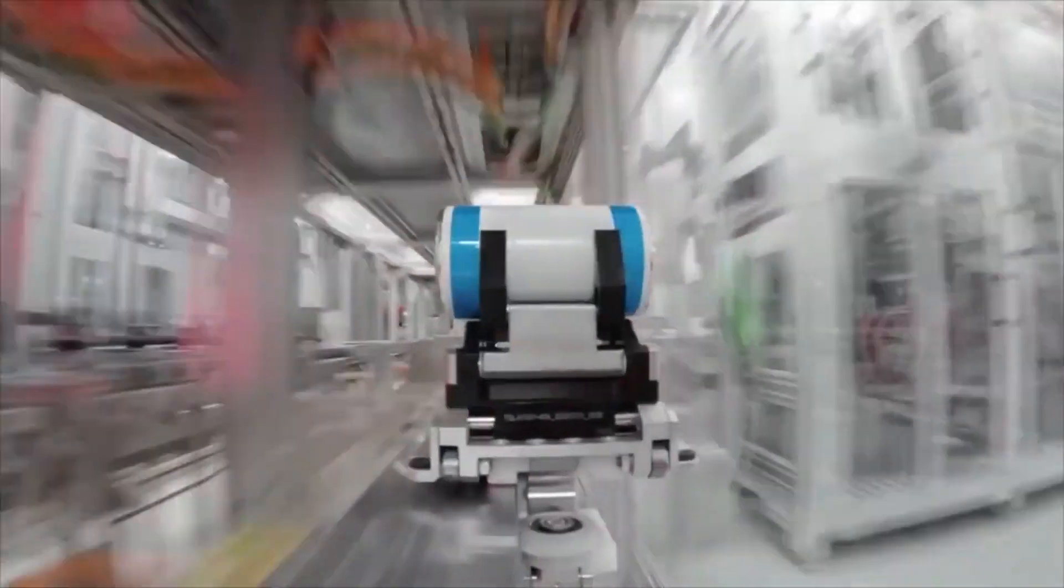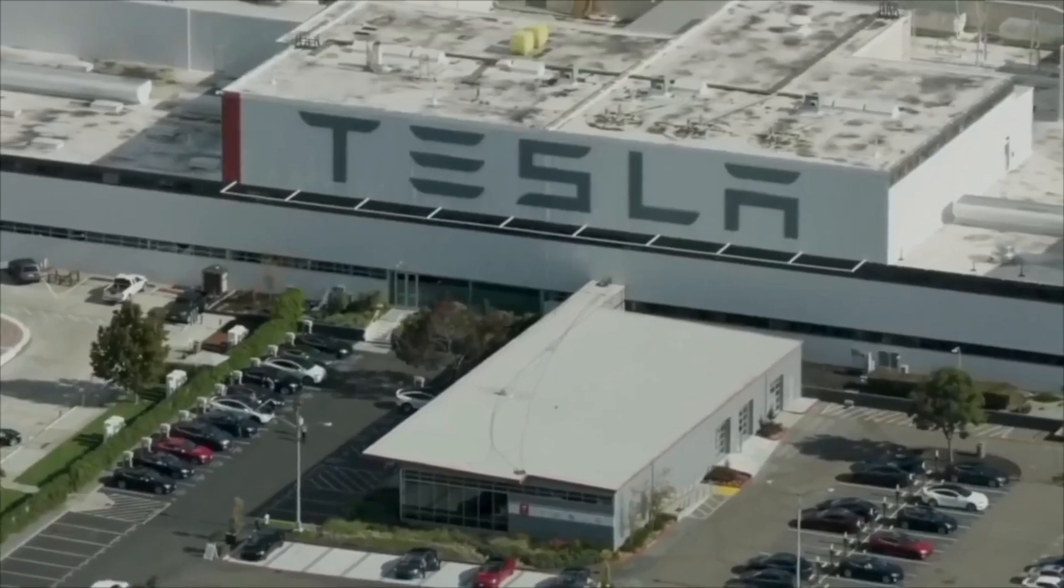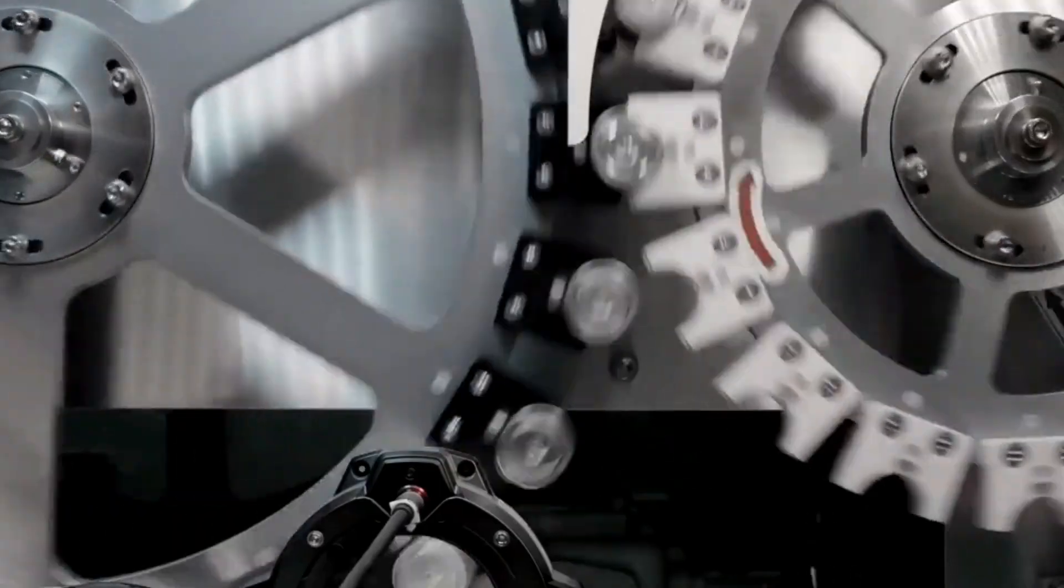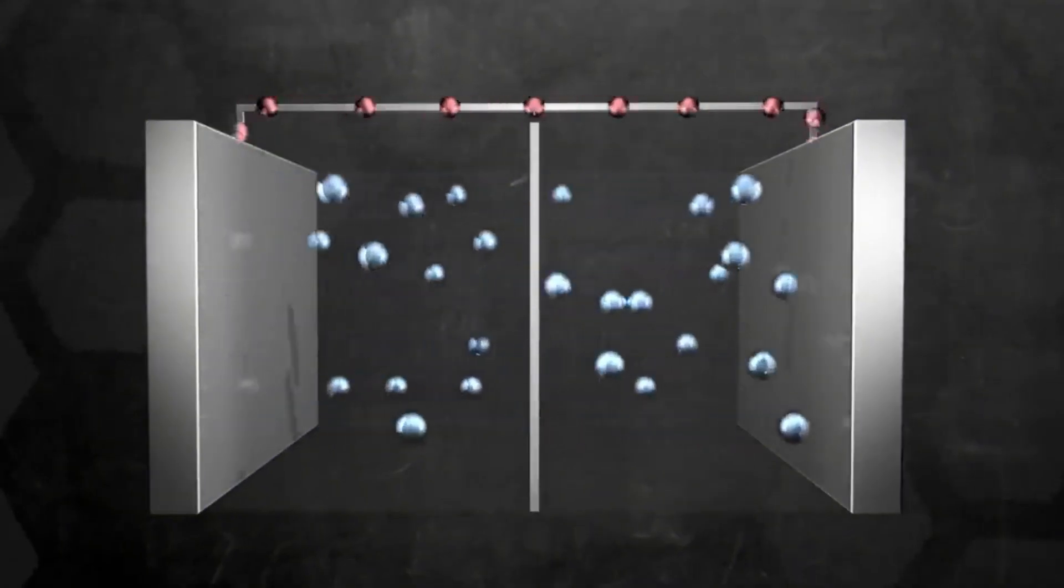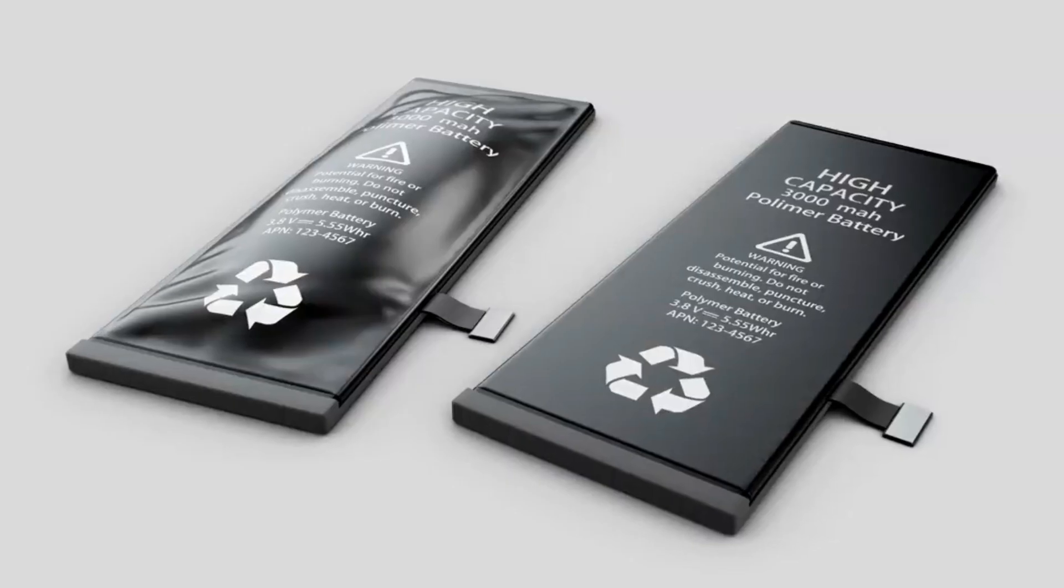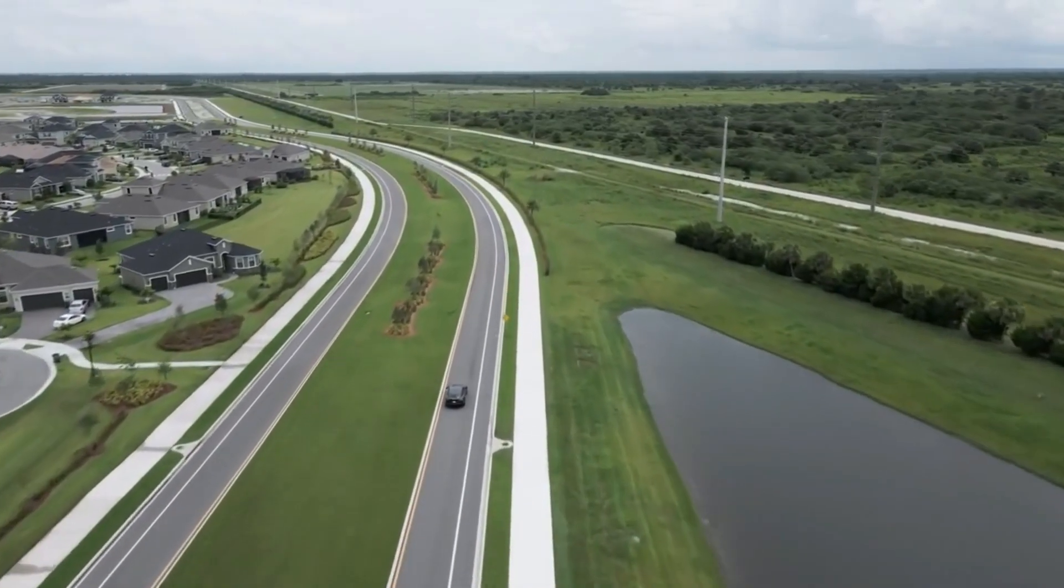This breakthrough was achieved by replacing the tab, the part of the battery that links the cell to the thing that is powering on the new tabs. With fewer cells, Tesla's new 4680 cell would boost the energy capacity of a company's electric vehicle batteries by five times, making them six times more powerful and extending the vehicle's range by 16 times.